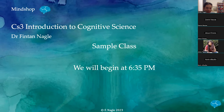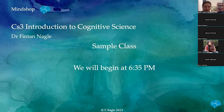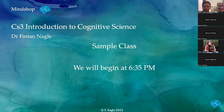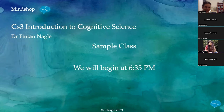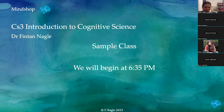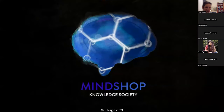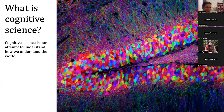Welcome everyone to our sample class for introduction to cognitive science. We'll spend half an hour going over the whole course, seeing what we'll be covering and when the lectures are. This is a production of the Mind Shop Knowledge Society. We'll be asking what is cognitive science — this is my area, and this is the first course that Mind Shop's doing in English. It's the third run of our introduction to cognitive science, and we have a new and improved version for CS3.